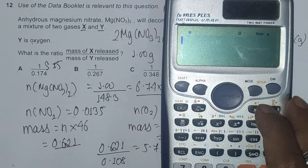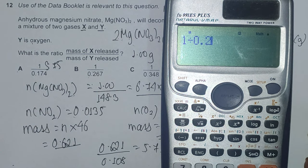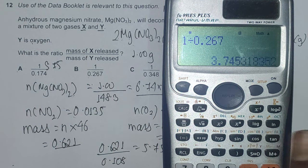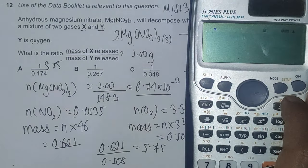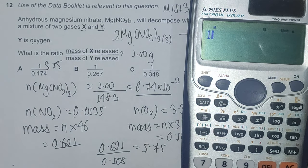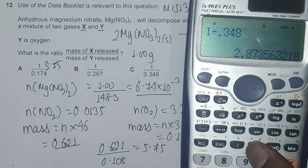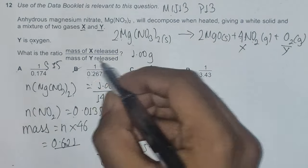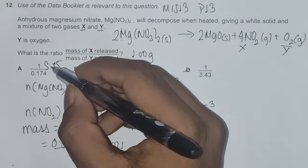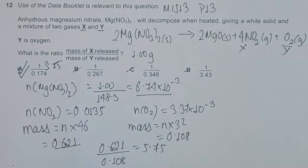1 by 0.267 is 3.75, it's out. And 1 by 0.348 is 2.87, it's also out. Option B and C also rule out, and option A is our final correct answer.